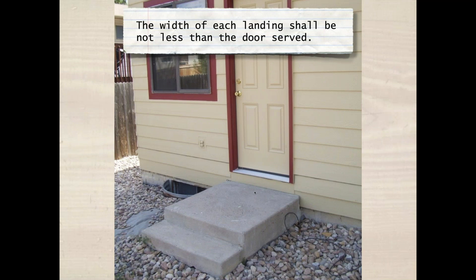The width of the landing. I think this is a weirdly written sentence and kind of poor code language. The code says the width of each landing shall not be less than the door served. Less than the door — less than what? Less than the width of the door or less than the width of the door opening? If it's a 36-inch wide leaf, do I need a 36-inch landing? I don't think it matters. I've never seen anyone push this issue to a 32-inch wide landing. Generally I get a 36-inch wide landing.